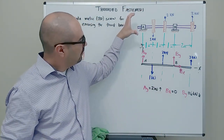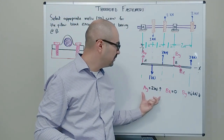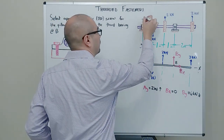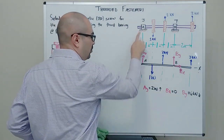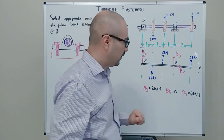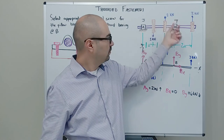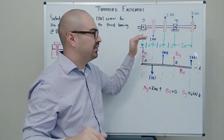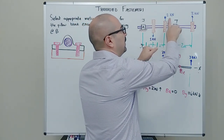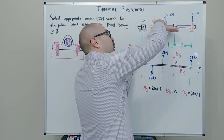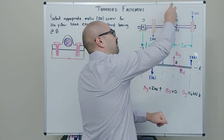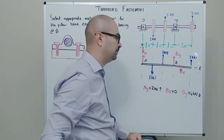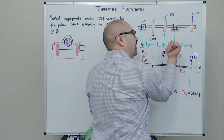So we're back to this problem. We had a shaft, we did the statics, and we figured out the reaction forces: Ay for the bearing at A and By for the bearing at B. This was a journal bearing and that one was a thrust bearing — which is why there's no Ax here. Now I know that at bearing B I need a six kilonewton force going down to keep the shaft in equilibrium. We have one kilonewton force down here and two and three on the other end, all trying to pull the shaft up.